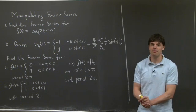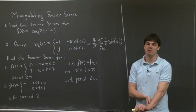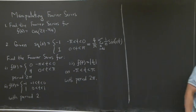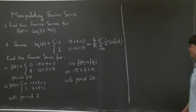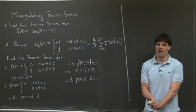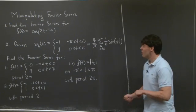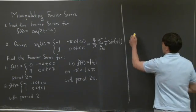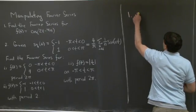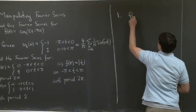OK, so I'll let you think about this problem and I'll be back in a moment. Hi everyone, welcome back. So let's take a look at the first problem: finding the Fourier series of cosine 2t minus pi over 4.